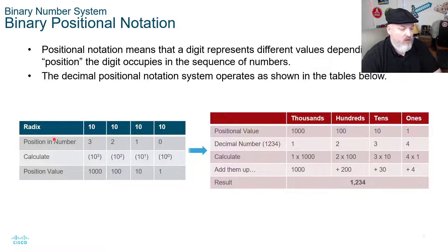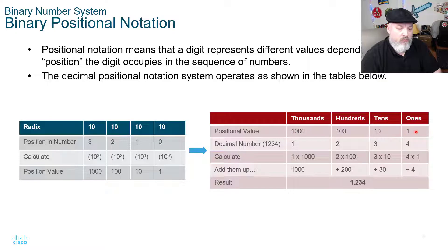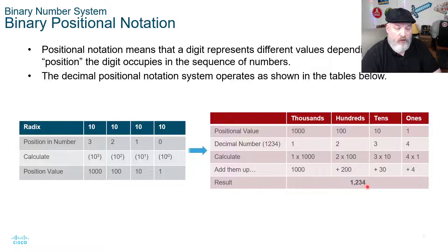We have a radix — the 10-place — with position numbers zero, one, two, and three. You know: the ones place, the tens place, the hundreds place, the thousands place — that's decimal. So if we had one, two, three, four, that would be 1,000 plus 200 plus 30 for our tens place, and four for our ones place. That's how we do it on the decimal side.